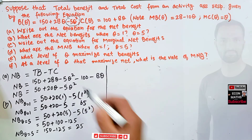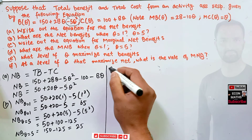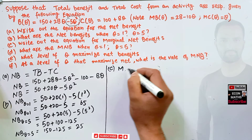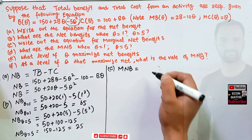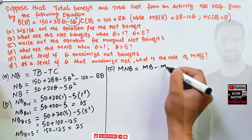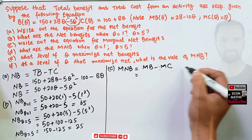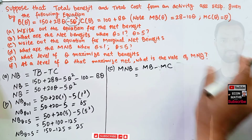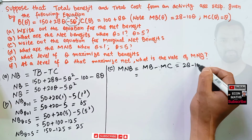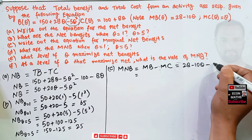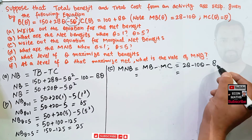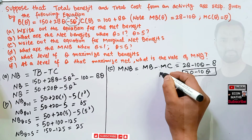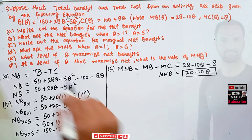Part C asks us to write out the equation for marginal net benefit. Marginal net benefit equals marginal benefit minus marginal cost. Marginal benefit is 28 - 10Q, and marginal cost is 8. Subtracting: 28 - 8 = 20, so the marginal net benefit function is MNB(Q) = 20 - 10Q.